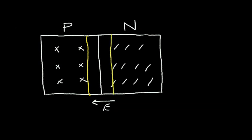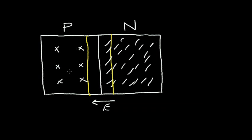Now, I want to ask what happens if we have a difference in concentration between these N and P regions. For example, if we have a high concentration of dopant for the N region, we have a large surplus of electrons. But in the P region, we have a very low concentration of impurities. What's going to happen is these electrons have to migrate further into the P material to recombine with the hole.